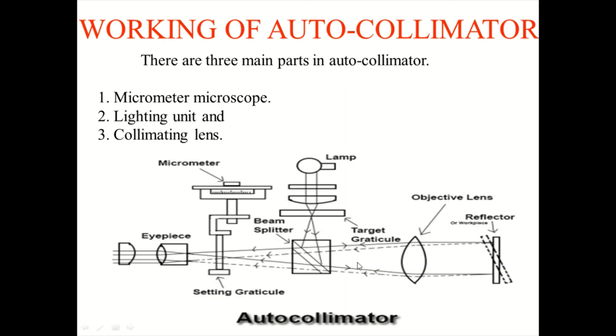These are the basic components of the autocollimator. Through the lamp, the light source will be passed over here. Through the beam splitter, the light source will be split over there.